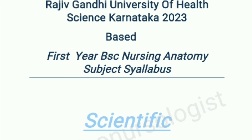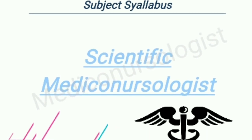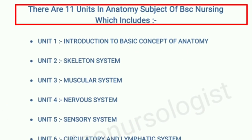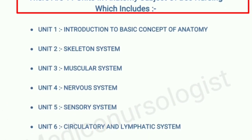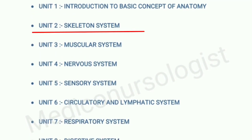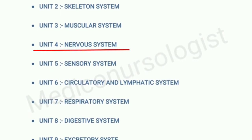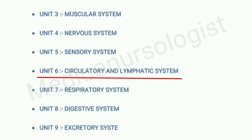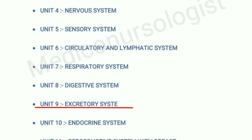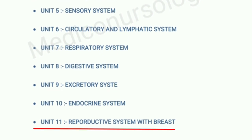Let's discuss the syllabus and blueprint of the anatomy subject to get a brief idea about major topics to study, chapter-wise important questions, and weightage of marks per unit. There are 11 units in the anatomy subject of BAC nursing: Unit 1 introduction to the basic concept of anatomy, Unit 2 skeletal system, Unit 3 muscular system, Unit 4 nervous system, Unit 5 sensory system, Unit 6 circulatory and lymphatic system, Unit 7 respiratory system, Unit 8 digestive system, Unit 9 excretory system, Unit 10 endocrine system, and Unit 11 reproductive system with breast.